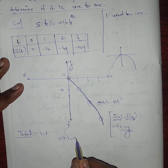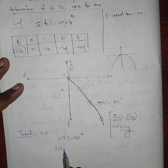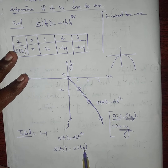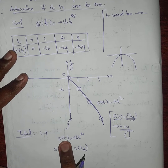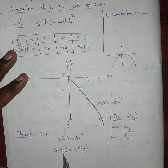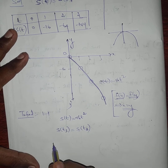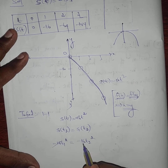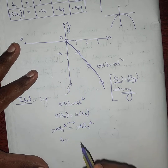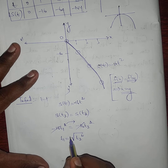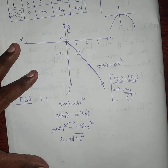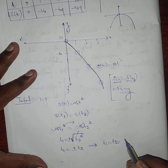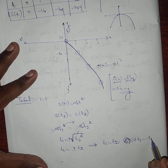Given s(t) = -16t², we assume s(t₁) = s(t₂) and want to prove t₁ = t₂. So: -16t₁² = -16t₂². Cancel -16 from both sides: t₁² = t₂². Taking the square root: t₁ = ±t₂, which means t₁ = t₂ or t₁ = -t₂.